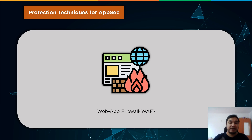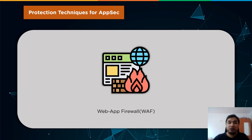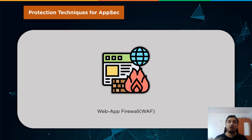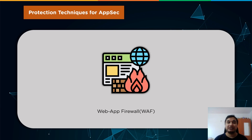Web application firewall architecture does not address all risks, but it may be used in conjunction with other defense mechanisms as part of a portfolio of security solutions to provide a comprehensive defense against diverse attack vectors. It is a protocol layer 7 protection in the Open Systems Interconnection (OSI) model that helps defend online applications against attacks such as cross-site scripting, cross-site request forgery, SQL injection, and file inclusion.